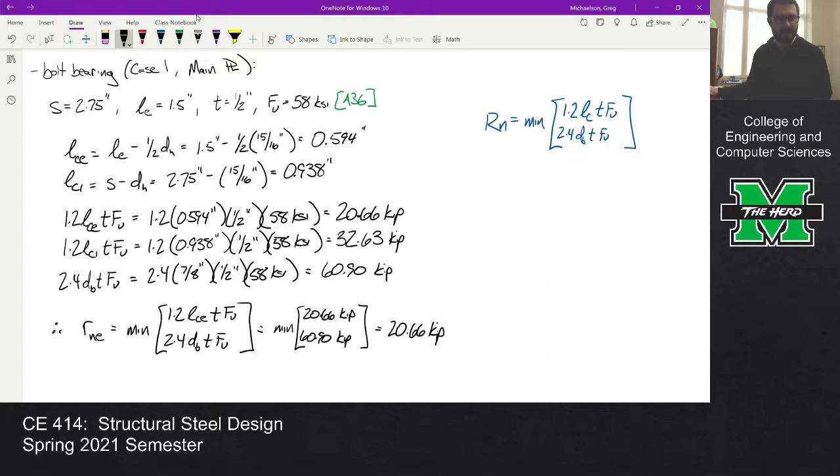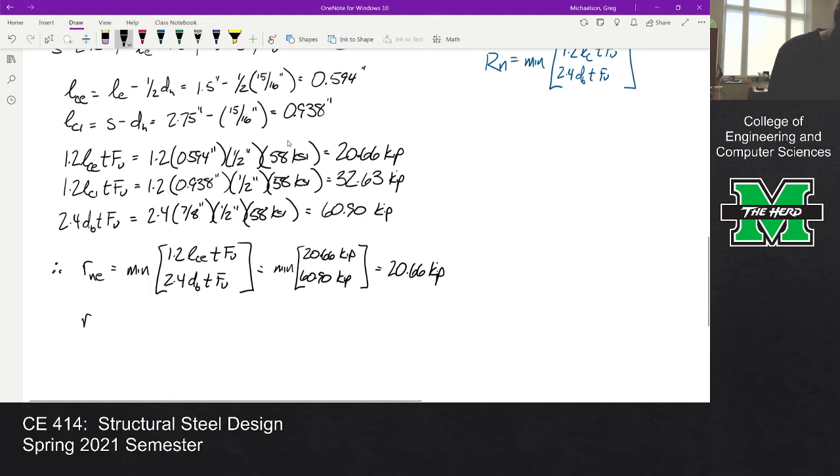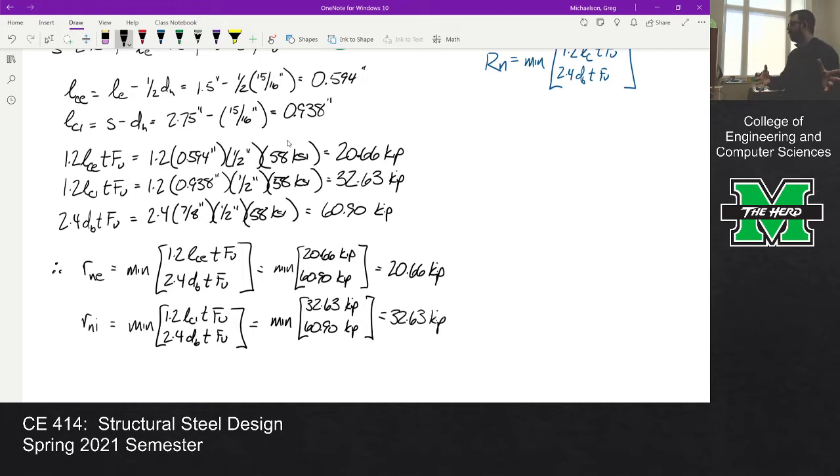And then for rn_i, let me scroll down a bit so I got a little bit more room. That's the minimum of 32.63 and 60, which is 32.63. So there's our individual capacities.